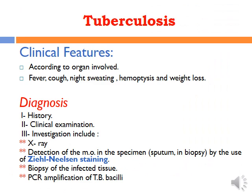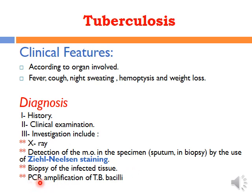The clinical features of tuberculosis depend on the organ affected. When the lungs are affected, symptoms include cough, hemoptysis, weight loss, night sweats, and fever. Diagnosis depends on history, clinical examination, and investigation — usually detection of microorganisms in sputum or biopsy using Ziehl-Neelsen stain. Biopsy of the affected site reveals caseating giant cell granuloma. PCR (polymerase chain reaction) can also be used for detection of TB bacilli.